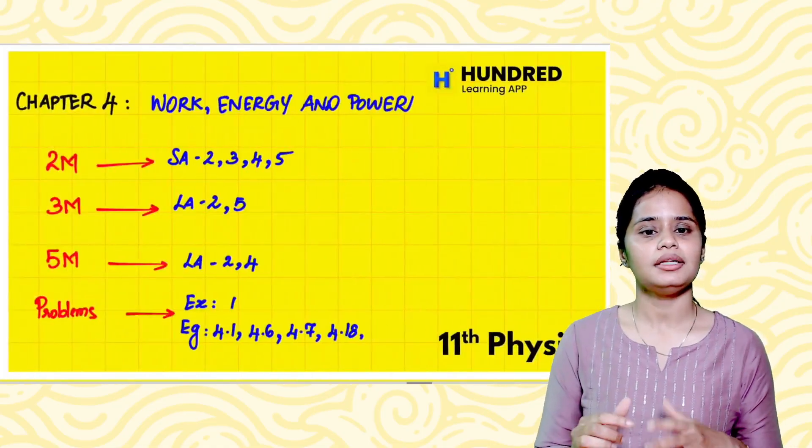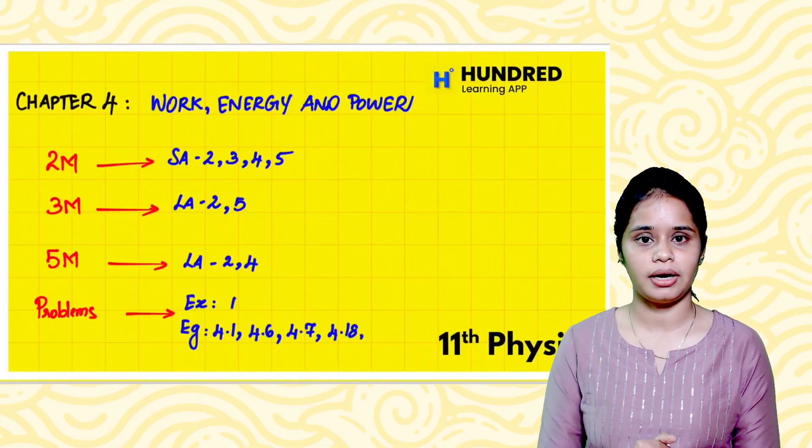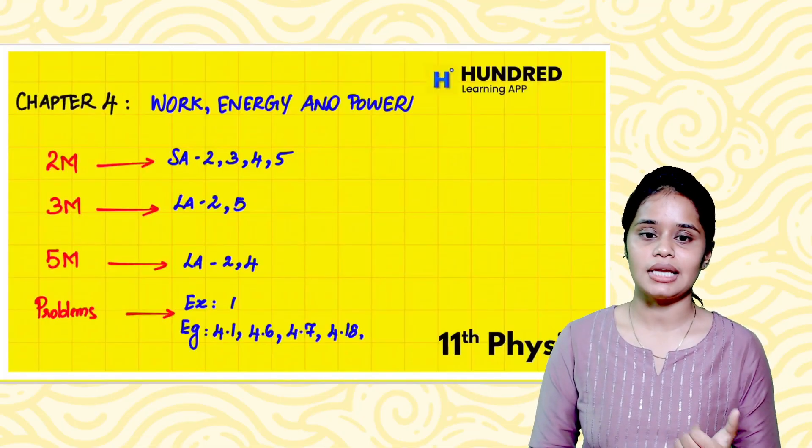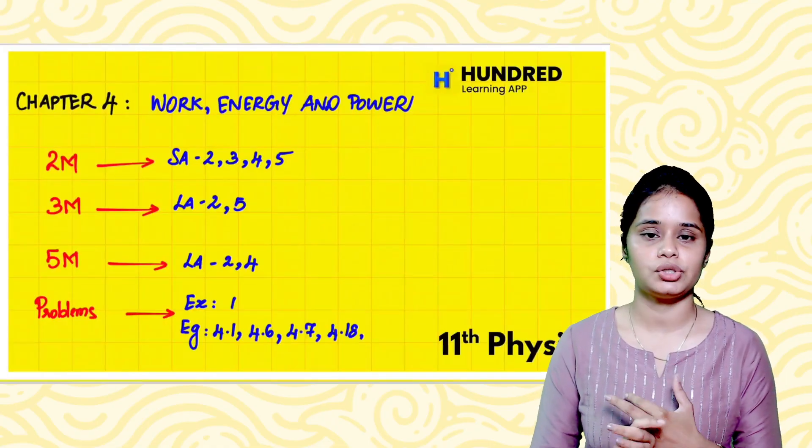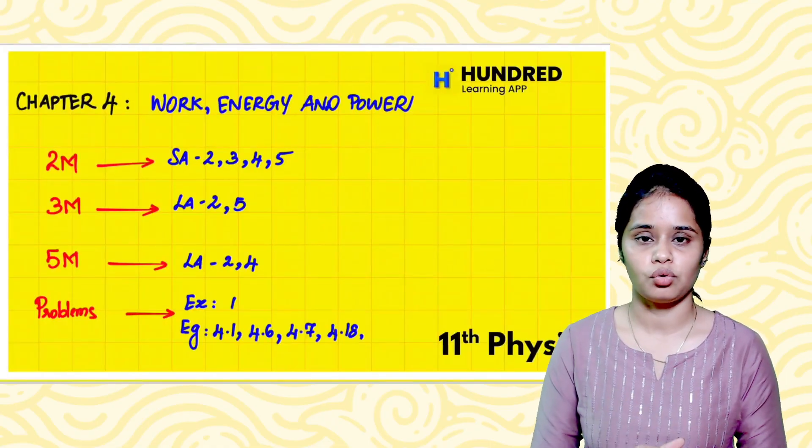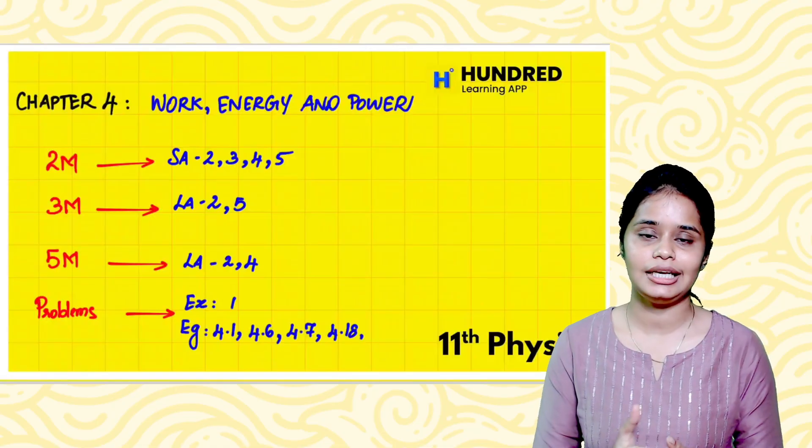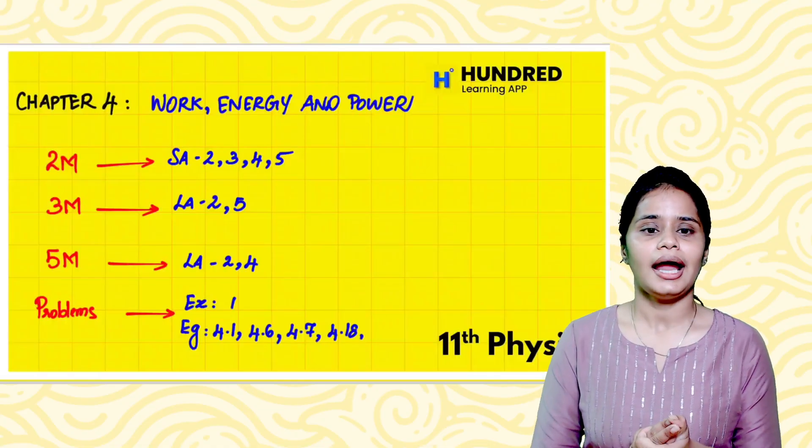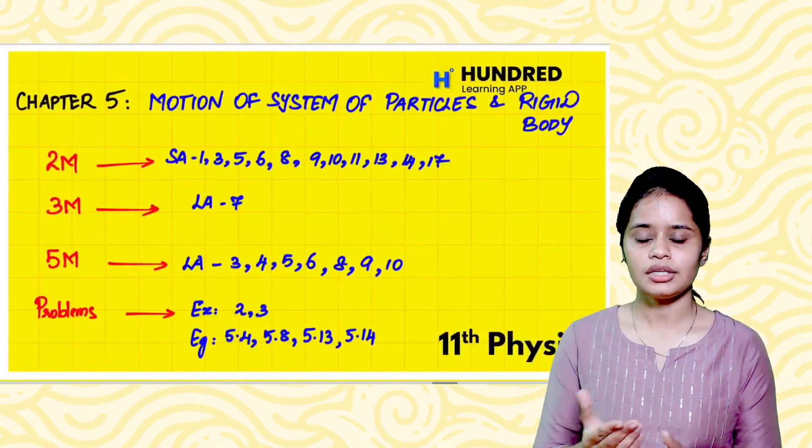In chapter 4, Work, Energy, Power, the important questions are 2nd, 1st and 3rd. These two questions are important. Law of conservation of linear momentum and recoil of gun are very important.